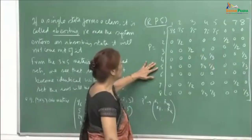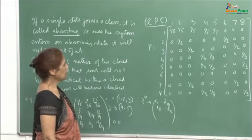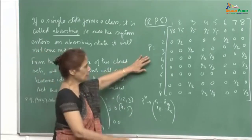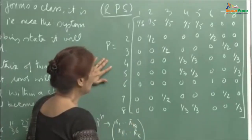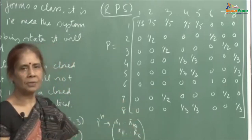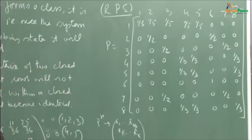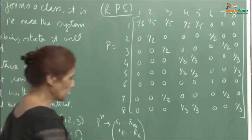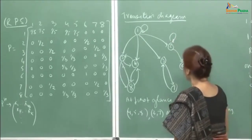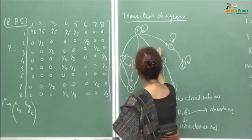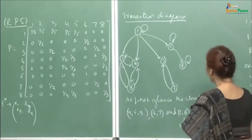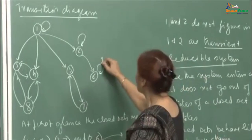Now consider a big 8-by-8 transition matrix example from Ravindran, Phillips, and Solberg, with a transition diagram drawn. If you look at this diagram, you see that states 4, 5, 8 are connected, states 3 and 7 are connected, and state 2 connects to 6. However, there is no arc from 6 back to 2, and p_66 equals 1 — the probability of staying in state 6 is 1. So once the system comes to state 6, it stays there. Therefore, state 6 is an absorbing state.